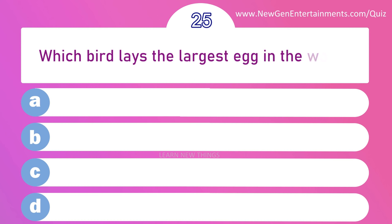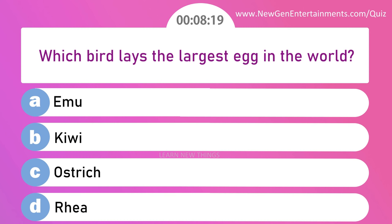Which bird lays the largest egg in the world? Options are: A) Emu, B) Kiwi, C) Ostrich, and D) Rhea. Answer is option C: Ostrich.